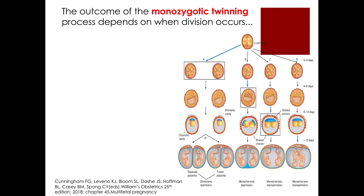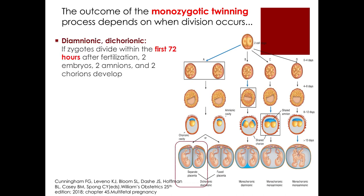The outcome of the monozygotic twinning process depends on when division occurs. For a diamnionic dichorionic pregnancy, this happens when the zygote divides within the first 72 hours after fertilization, thereby resulting in two embryos, two amnions, and two chorions.